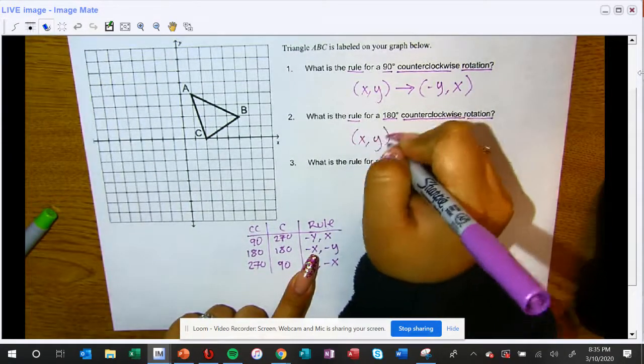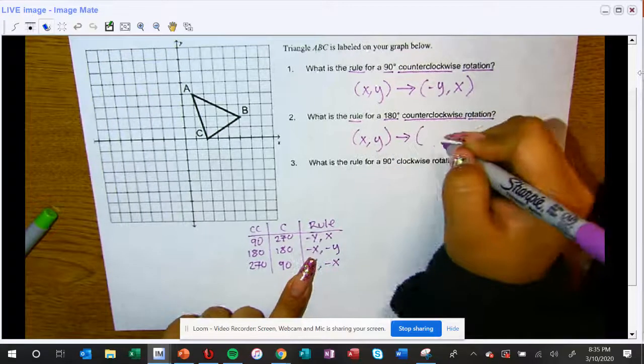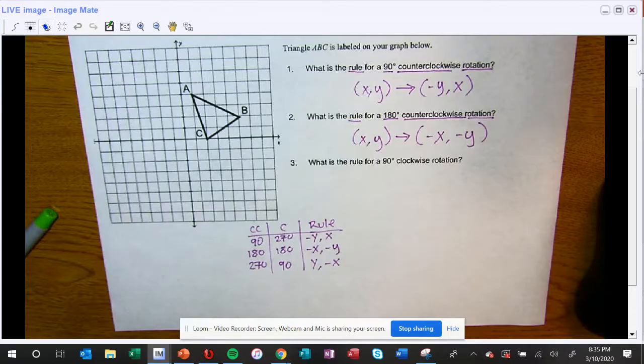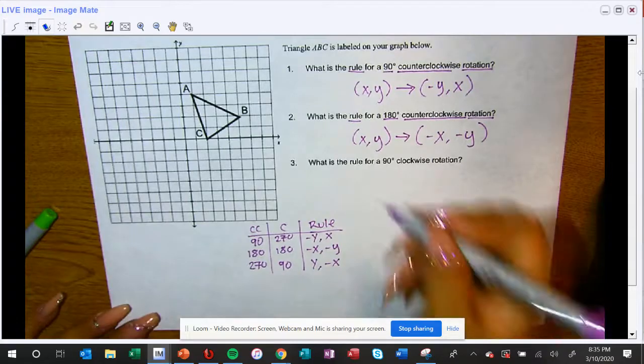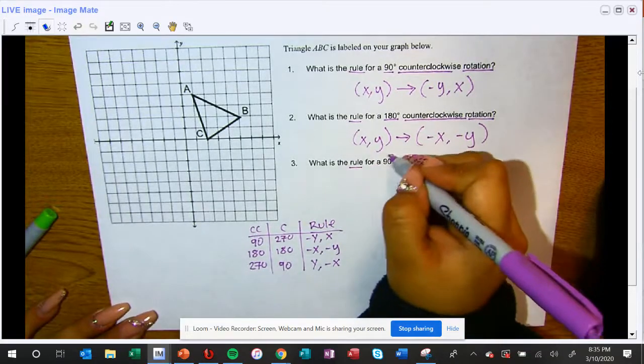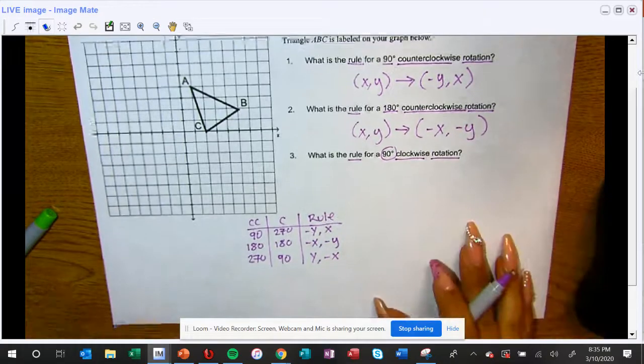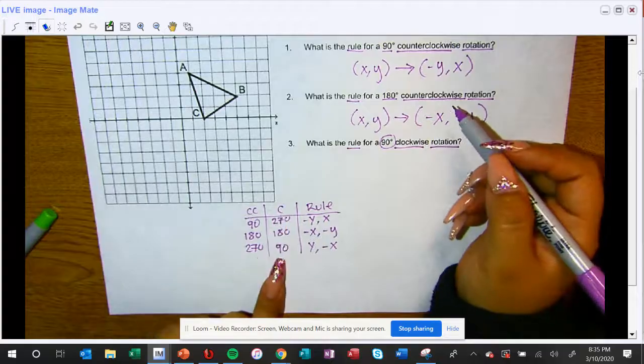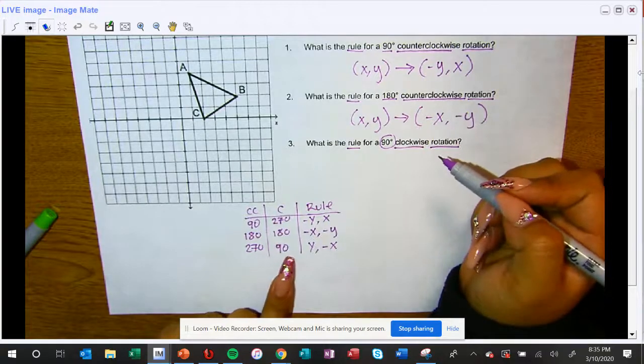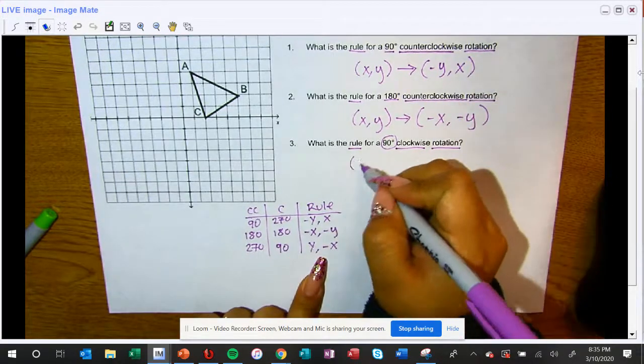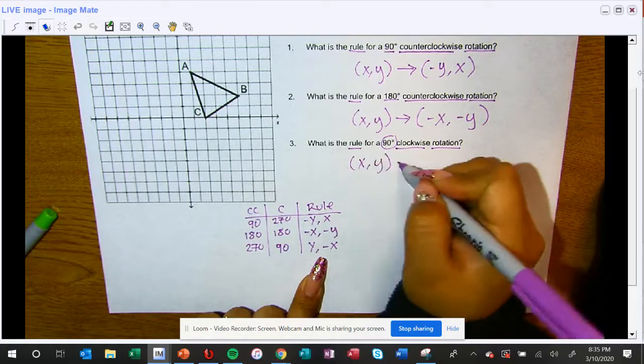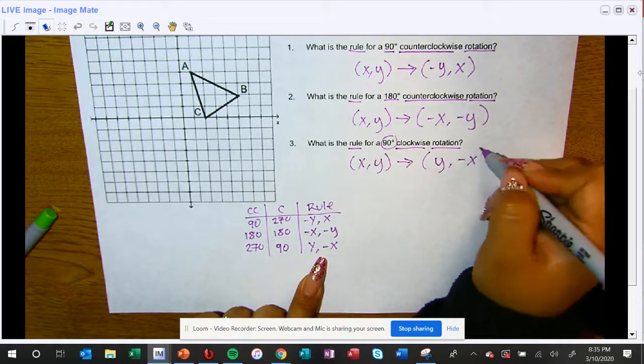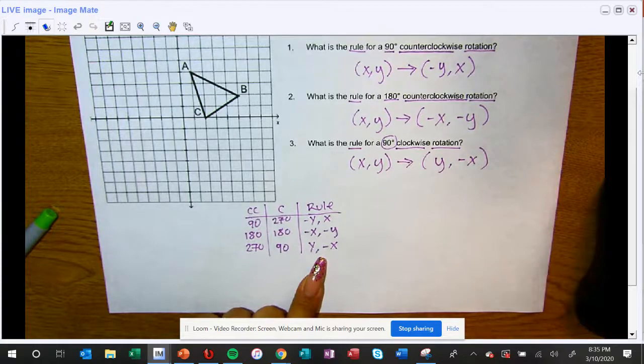Here they're asking for the rule of a 90 degree clockwise rotation. So I'm going clockwise, looking at 90 degrees, and going across this way: X comma Y arrow to Y comma negative X. And that's it, that's all you have to do.